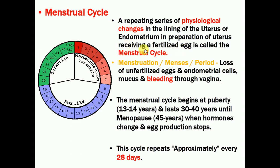During the menstrual cycle, there is an occurrence of menstruation, which is also called menses or period. It involves the loss of an unfertilized egg, endometrium, mucus, and blood flow through the vagina — that is called menstruation. The menstrual cycle begins at puberty and ends at menopause, that is from about 15 years to 45 years of age, so near about 30 to 40 years of the cycle can be seen in females.